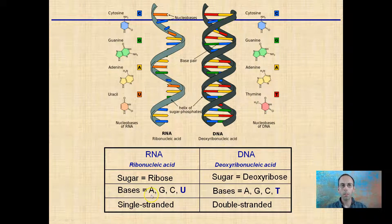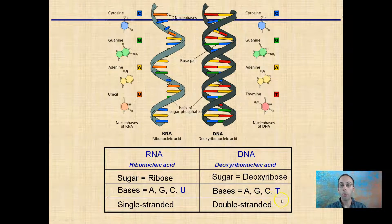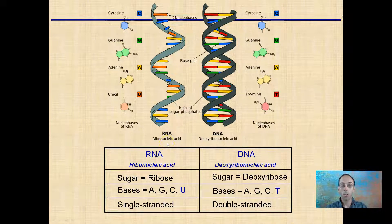What do those letters stand for? That's adenine, guanine, cytosine, and uracil — and uracil is highlighted because it's unique to RNA. For DNA, we still have adenine, guanine, and cytosine, but here we have thymine, which is unique to DNA. In addition, looking at these two structures, RNA is going to be single-stranded for our purposes, and DNA is double-stranded. That's another way we can tell them apart.